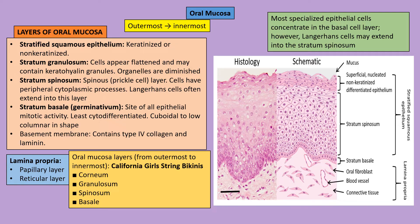Below the epithelium is the basement membrane; stratum basale cells rest on it, which contains type IV collagen and laminin. Below the basement membrane is the connective tissue called the lamina propria, which has two layers: the papillary layer and the reticular layer. In the papillary layer, rete ridges drop from the epithelium into the connective tissue, and papillae extend from the connective tissue into the epithelium. Below the mucosa is the submucosa.